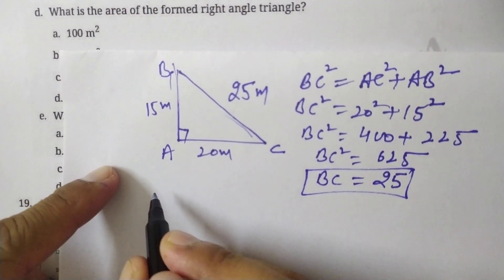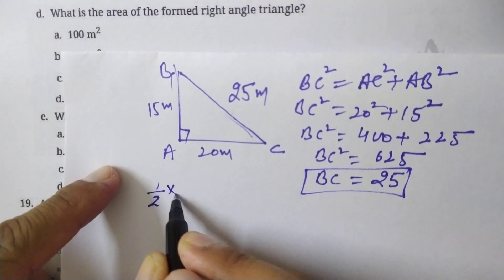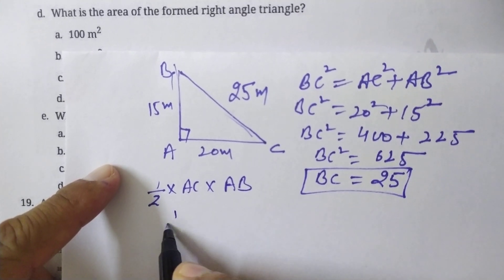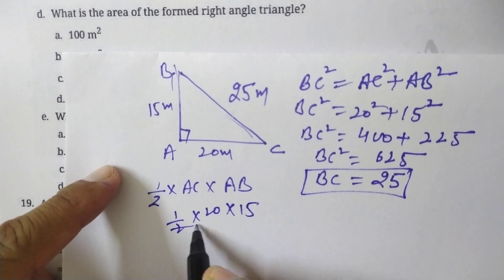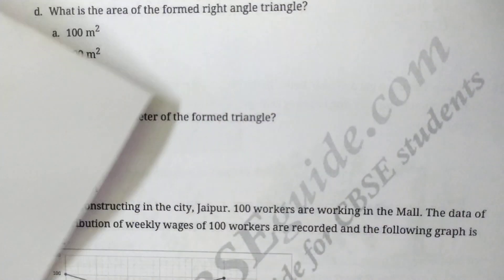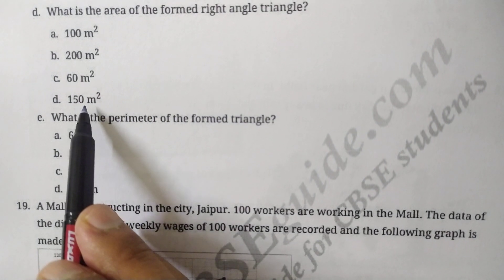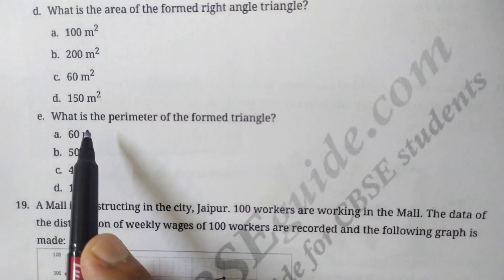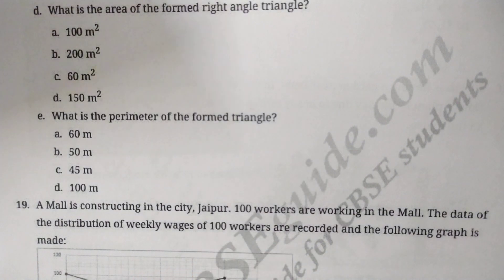Area of triangle is ½ × base × height. That is ½ × AC × AB, so ½ × 20 × 15 equals 150 meter squared. 150 meter squared is the area of this right angle triangle.